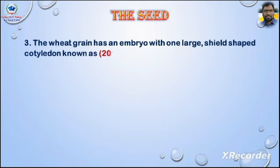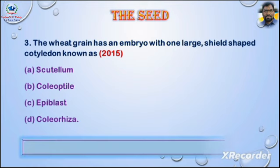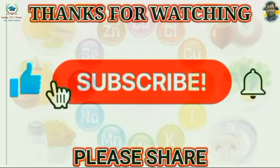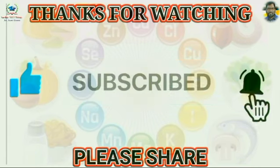Question number three: the wheat grain has an embryo with one large shield-shaped cotyledon known as — asked in NEET 2015. Options: A) scutellum, B) coleoptile, C) epiblast, D) coleorhiza. Answer is option A, scutellum. Thanks for watching, please like, share, and subscribe.